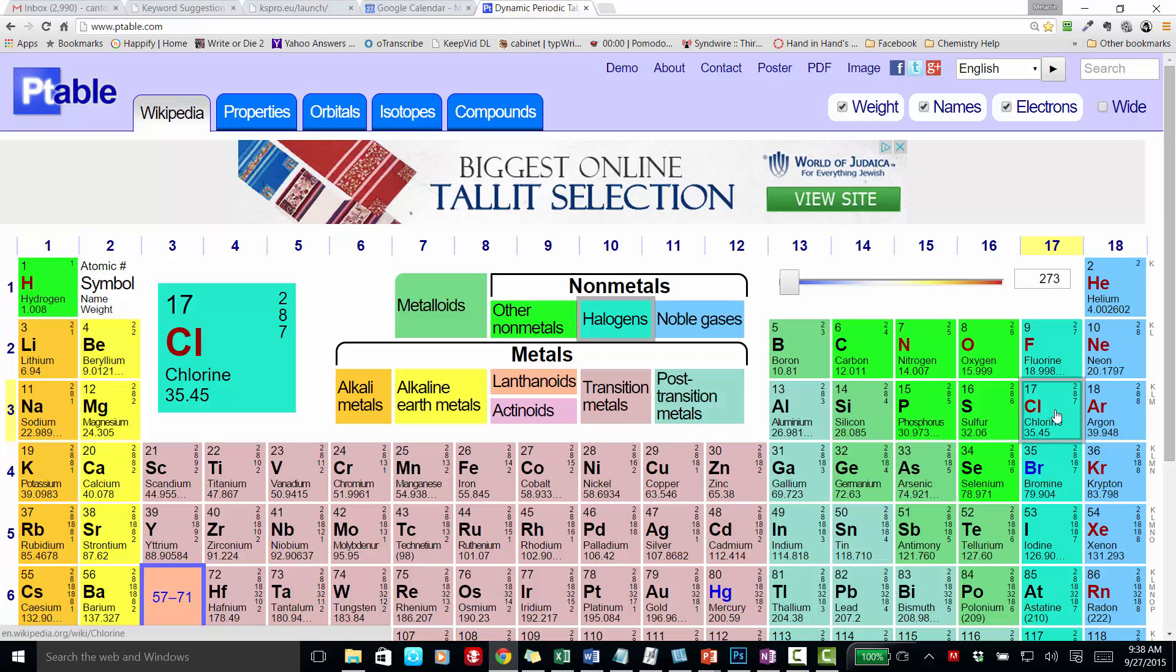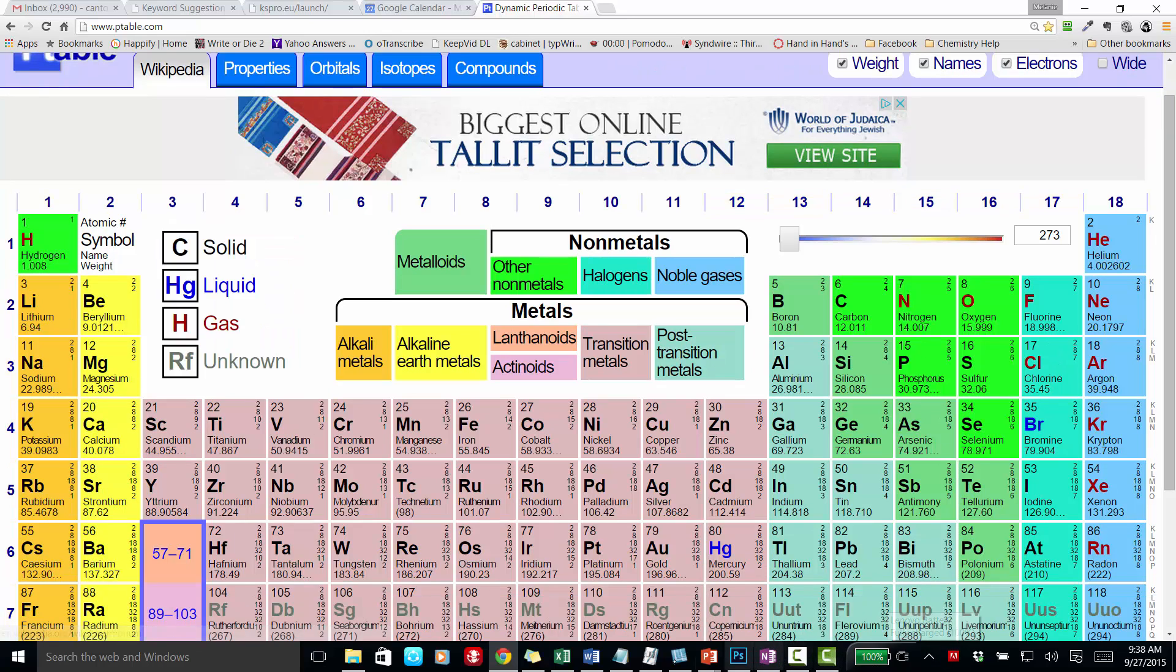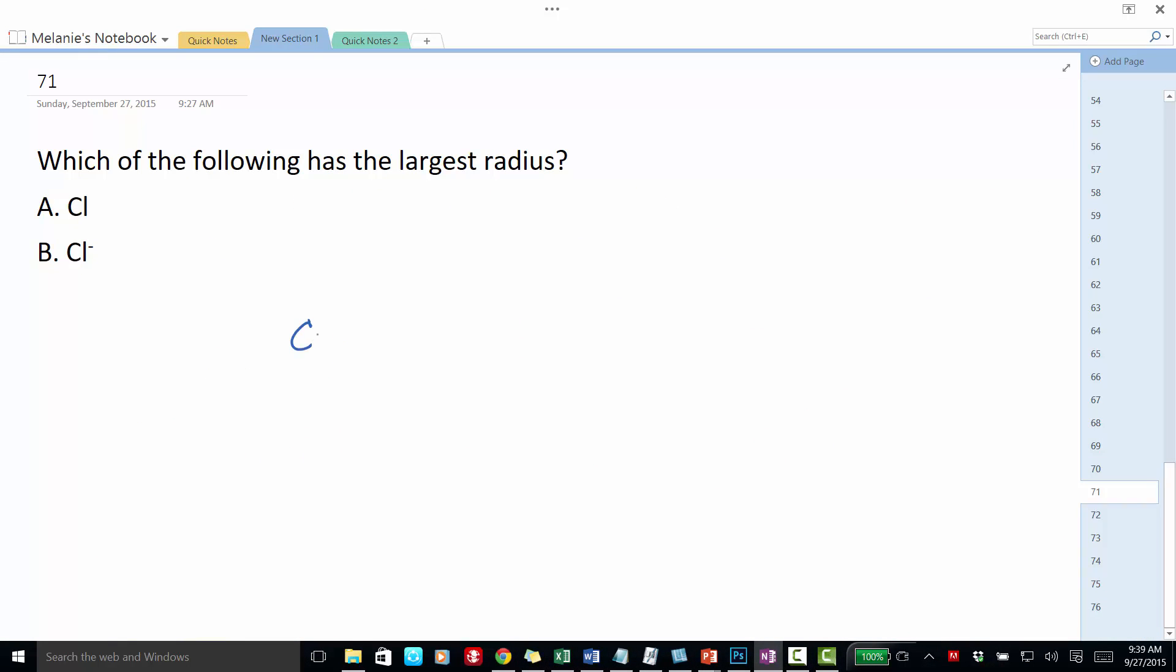A neutral atom of chlorine is going to have 17 electrons as well. So we've got chlorine here that's surrounded by 17 electrons.